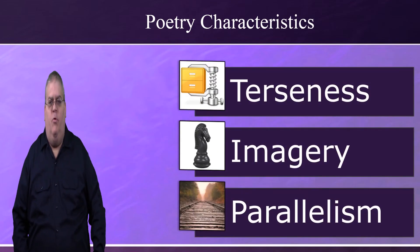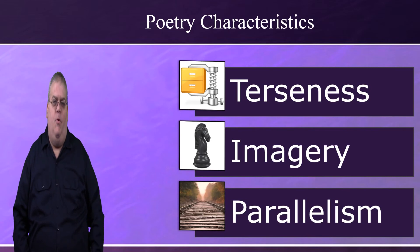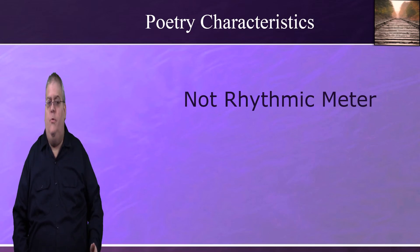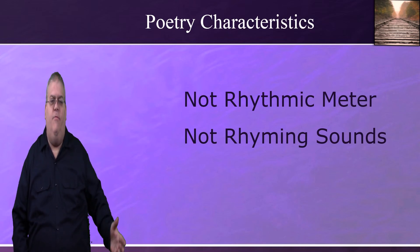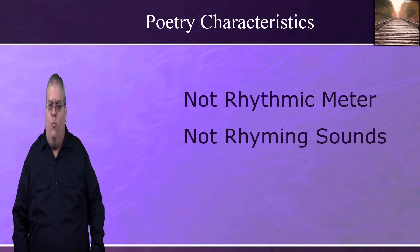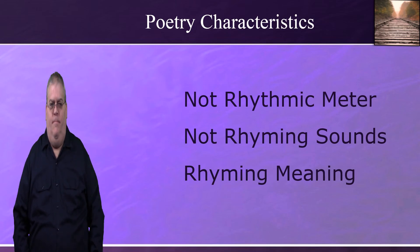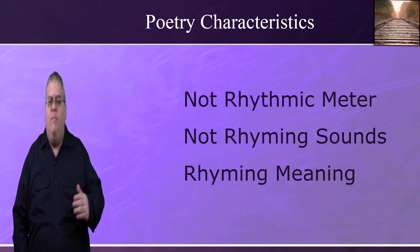The third characteristic of biblical poetry is called parallelism. There's no analogy for parallelism in English poetry. Biblical poetry doesn't have rhythmic meter — it doesn't have a regular rhythm of syllables like some English poetry has. And biblical poetry doesn't rhyme sounds. English poetry will often rhyme words at the end of each line, but biblical poetry doesn't. And even if it did, we wouldn't know because it was written in a different language. But Bible poetry rhymes meanings, and this does translate into any language. This rhyming of meanings between two or more lines is called parallelism.